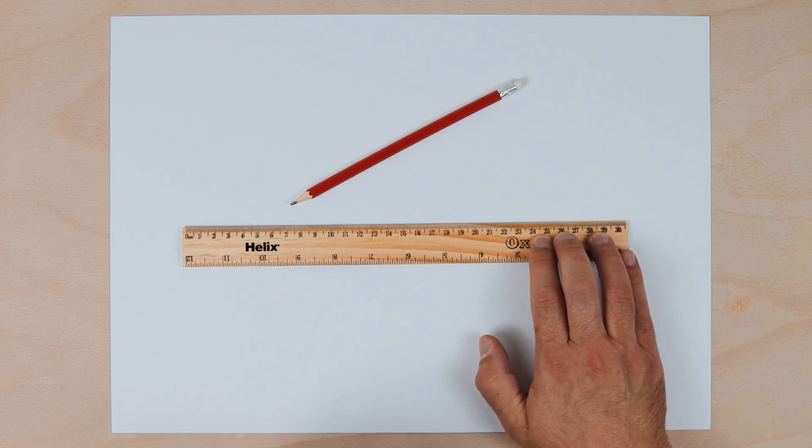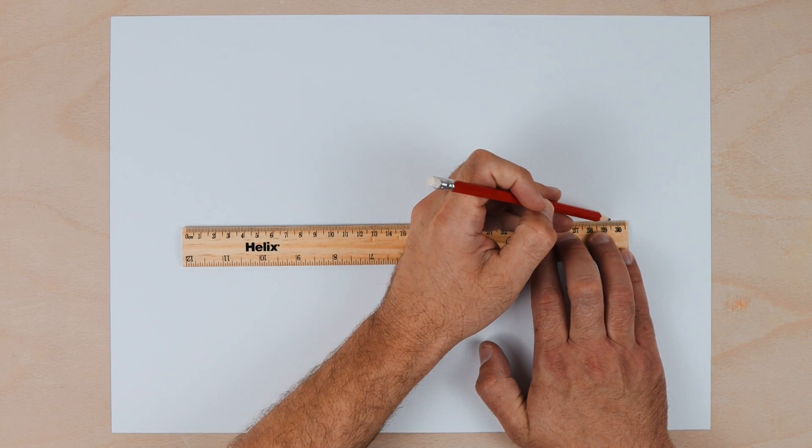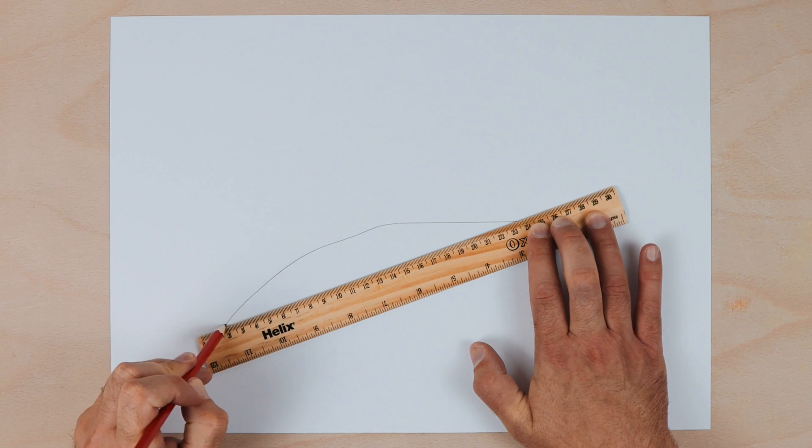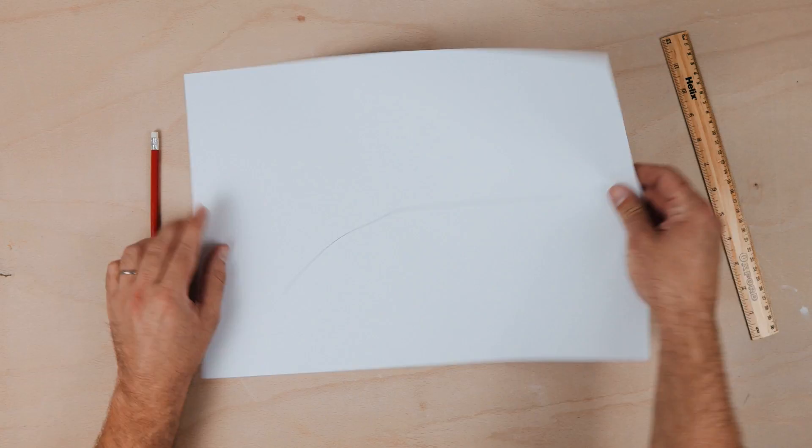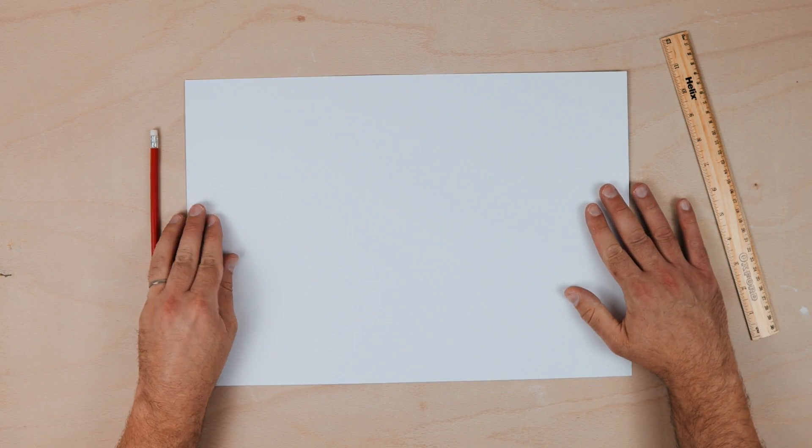Be honest, how many times have you seen your pupils do this? The truth is that rulers are a little bit too big for young people's hands and so we have to teach them a few techniques.